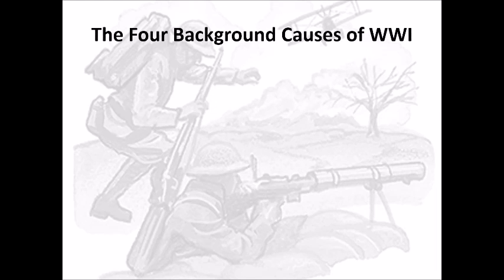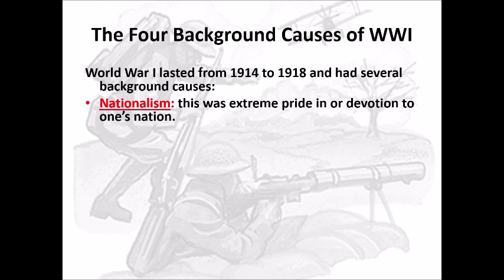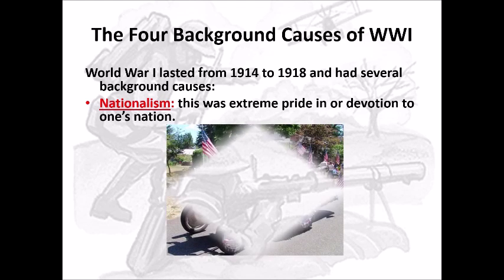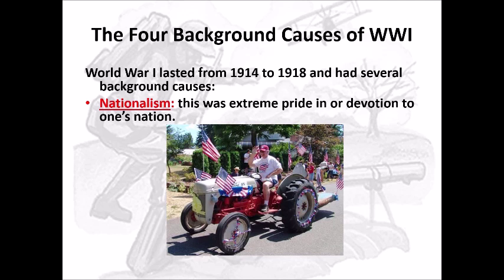So what are the background causes of World War I? We're going to talk about four background causes. The first one is nationalism — another way to say nationalism would be patriotism — and this is extreme pride in or devotion to one's nation. When you see people in the United States with the flag, all decked out in red, white, and blue, like this guy on the tractor here, this is definitely a sign of patriotism or nationalism. That's the first cause — write it down on your notes as A.